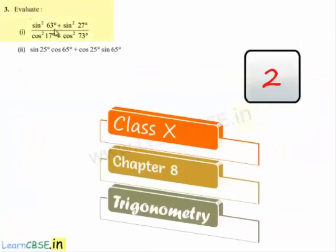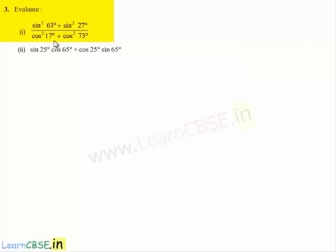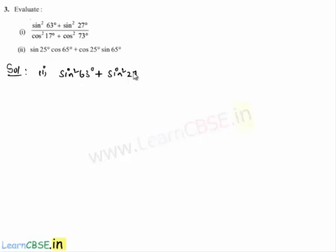Moving on to the third sum: evaluate sin square 63 degrees plus sin square 27 degrees, whole divided by cos square 17 degrees plus cos square 73 degrees.